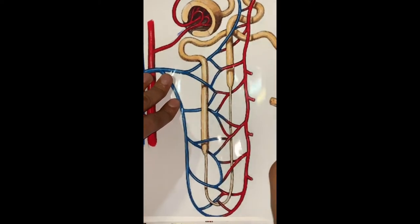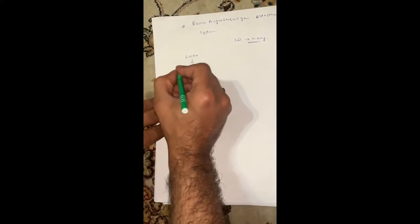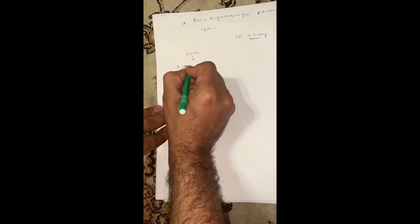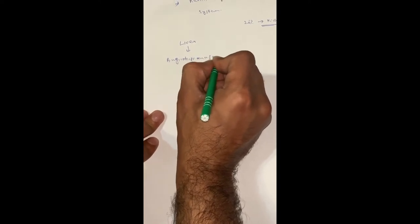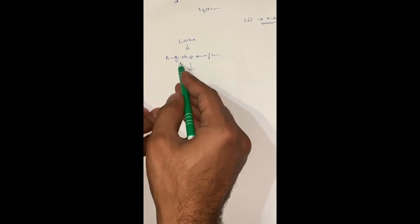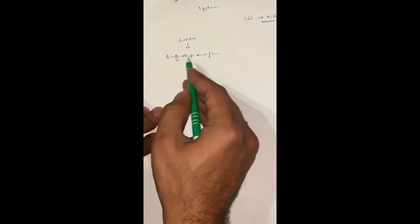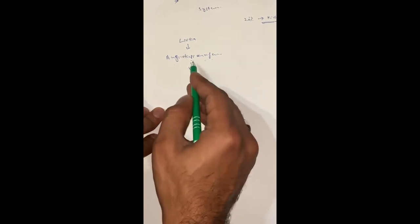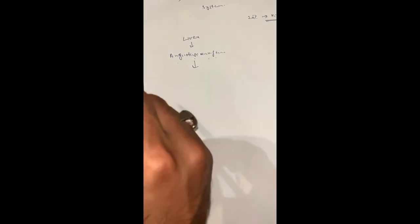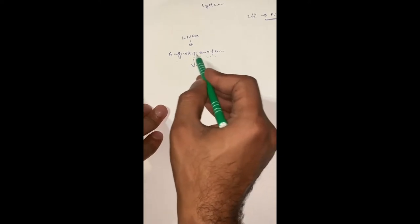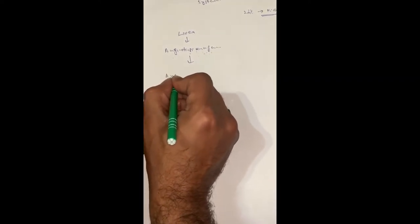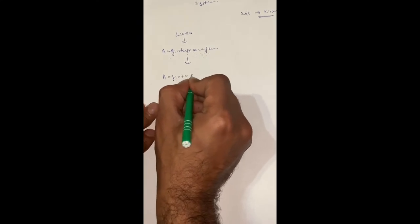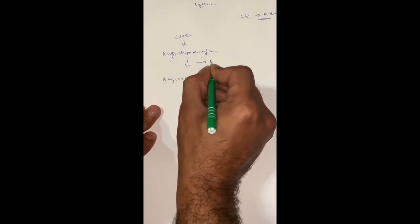At normal levels, angiotensinogen is released from the liver. This angiotensinogen is in inactive form and is present in the blood. When blood pressure is low, renin acts on the angiotensinogen and causes its activation into angiotensin I, with the help of the enzyme renin.